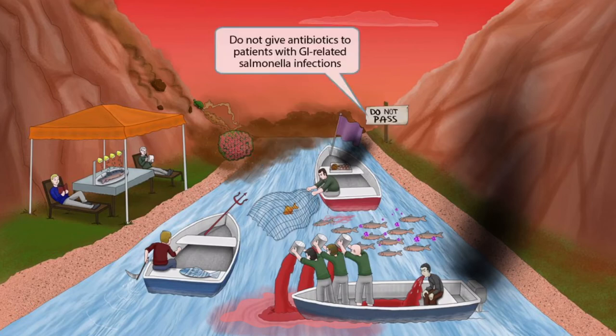Notice that we've shown a do not pass sign up by the cliff. The do not pass sign should help you remember that antibiotics should not be given in a patient with a gastrointestinal-related Salmonella infection, because it will prolong bacterial shedding in the stool. To review: give ceftriaxone to patients with sickle cell osteomyelitis, but do not give antibiotics to patients with gastrointestinal-related Salmonella infections.